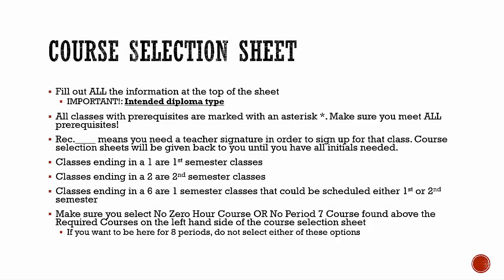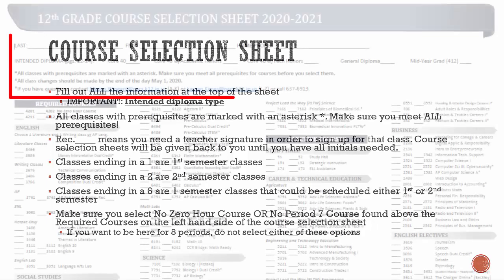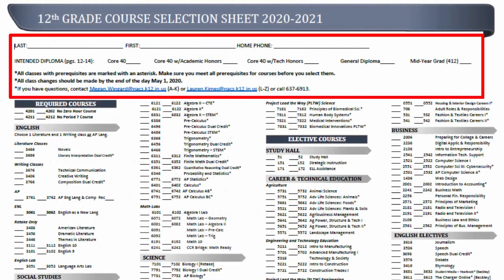At the top of your senior year course selection sheet, there is some important information that needs to be filled in and completed. Please make sure you fill out all of the information at the top of your course selection sheet, especially your intended diploma type. Marking your intended diploma type is very important as your counselor will use this to track and make sure you are working towards earning the specific diploma you indicated.